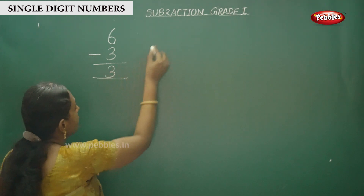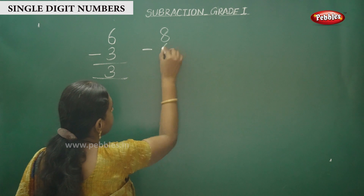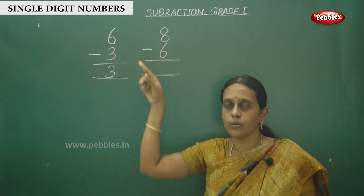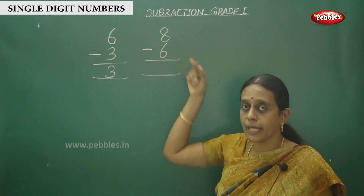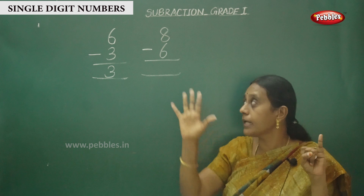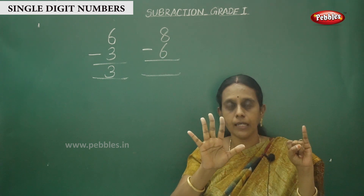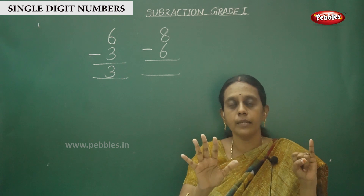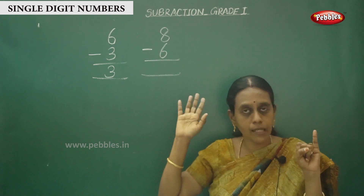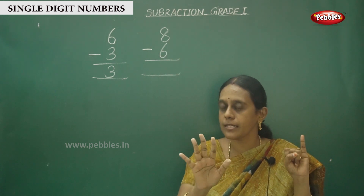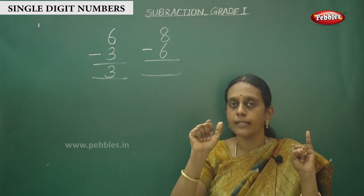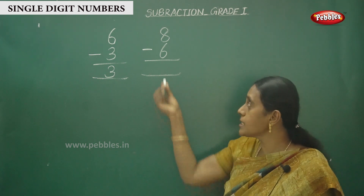One more sum. Before 8 — what is before 8? 7. So count: 7, 6, 5, 4, 3, 2. The answer is 2.